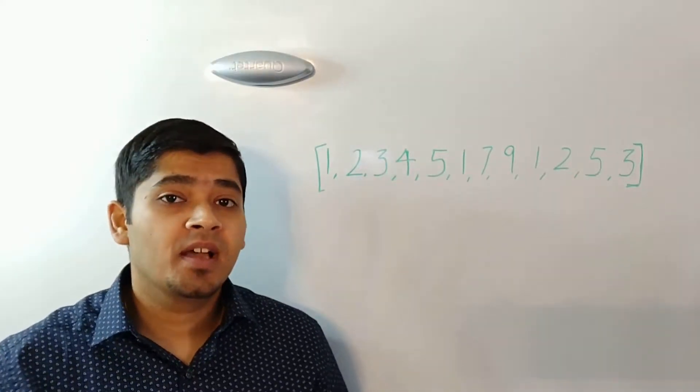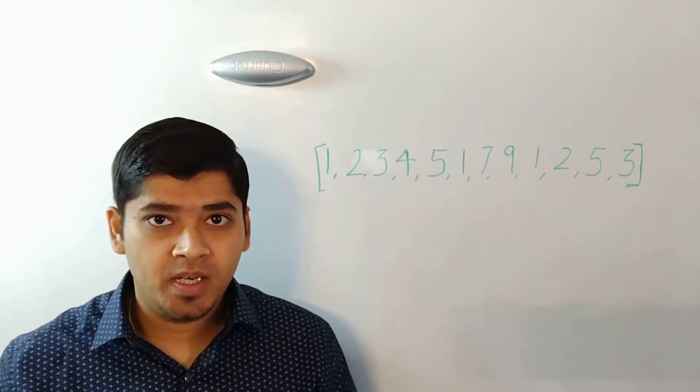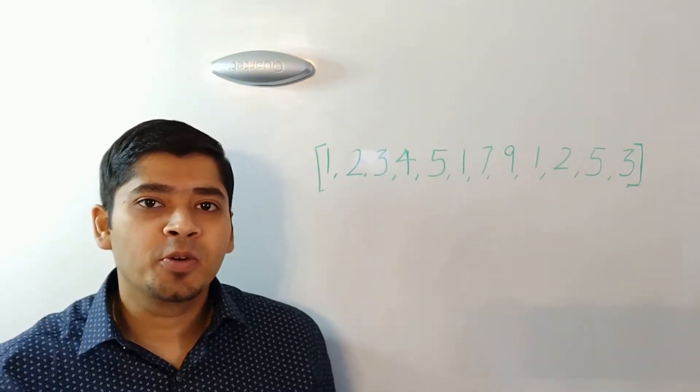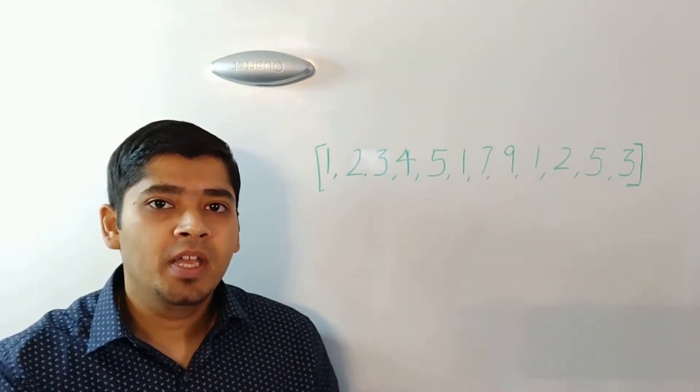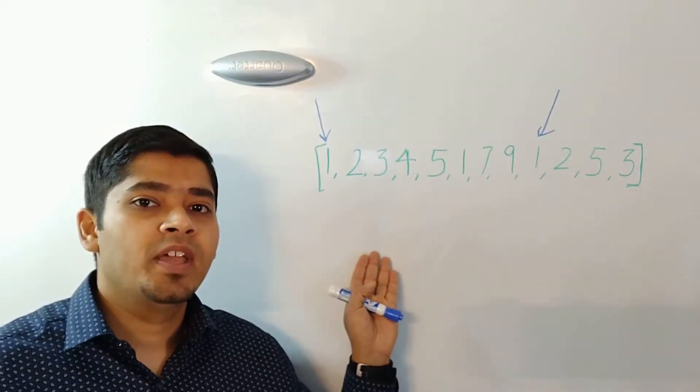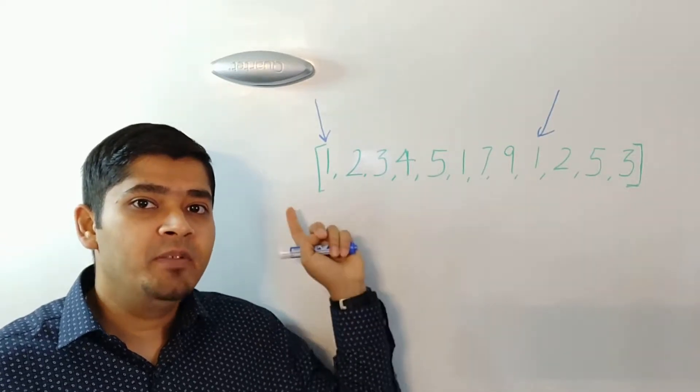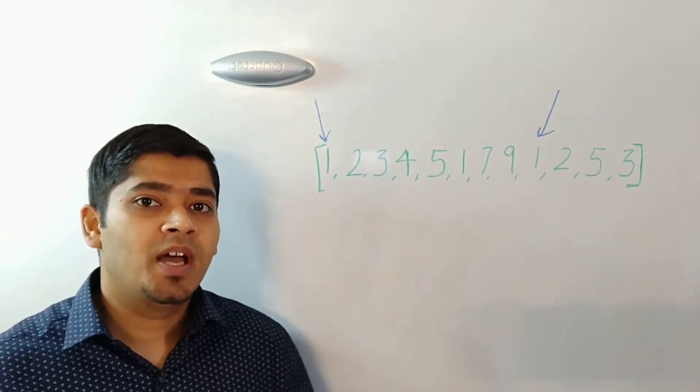And usually there is another part to this question as well. You have to return not only the degree but also the minimum sub array with the same degree. So in our case the minimum sub array with the same degree will be from the first one to the last one.